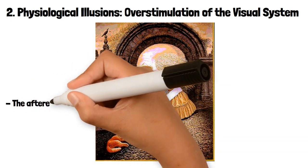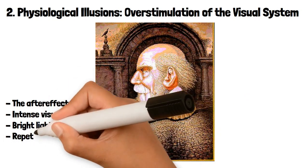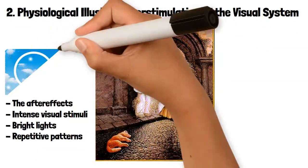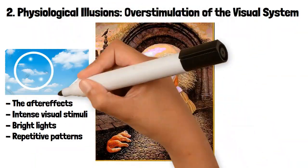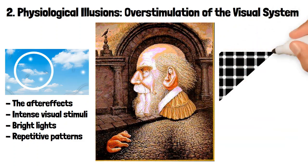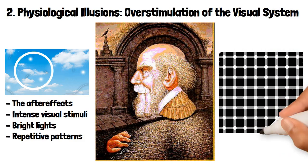These illusions are often caused by the after-effects of intense visual stimuli, such as bright lights or repetitive patterns. For example, after staring at a bright light and then closing your eyes, you might see spots or flashes of light. Another common example is the grid illusion, where dark spots appear at the intersections of a white grid on a black background due to the overstimulation of the visual system.